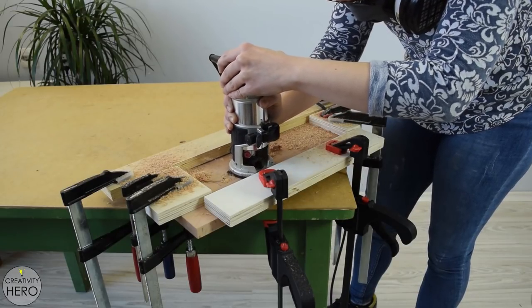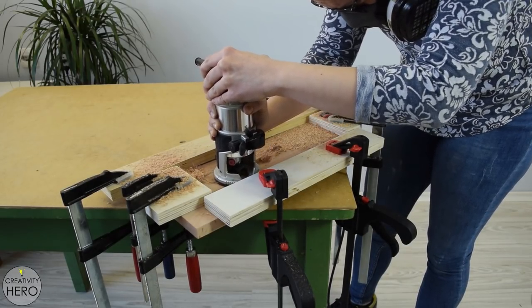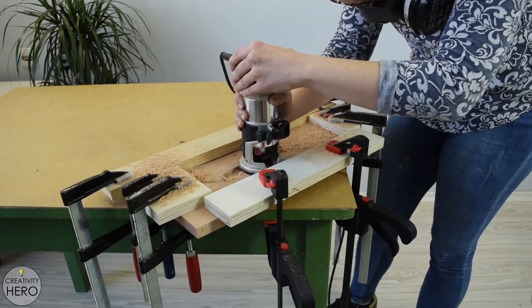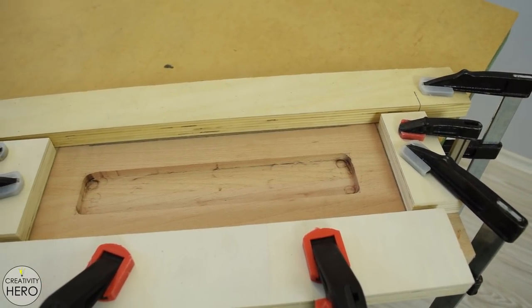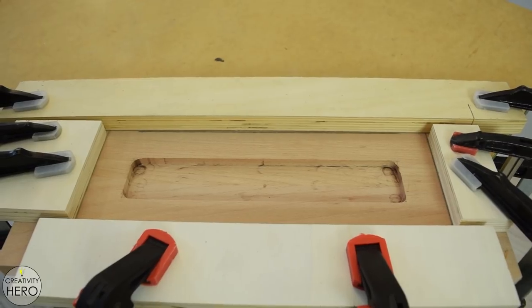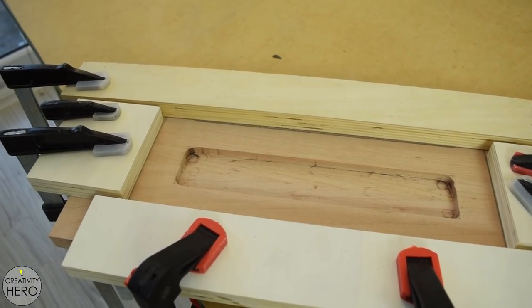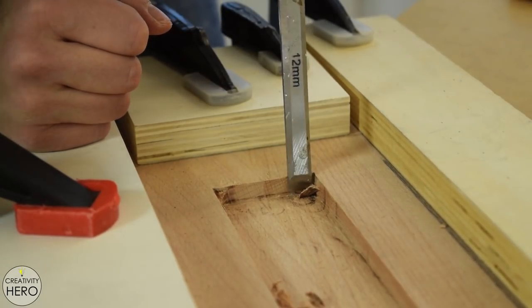This time I wasn't able to install the vacuum cleaner onto the router so I covered everything in dust. Anyway this turned out to be a pretty good way of removing the extra thickness of the wood. Next I need to chisel out the corners to make right angles.